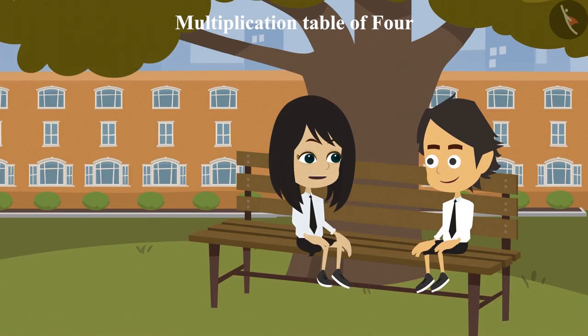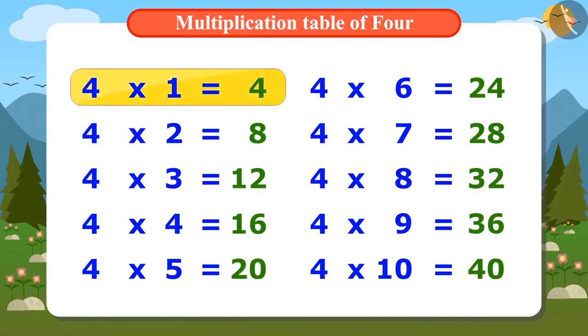Yes, now let's memorize this multiplication table of 4 in the sing-song manner. 4 ones are 4, 4 twos are 8, 4 threes are 12, 4 fours are 16, 4 fives are 20, 4 sixes are 24, 4 sevens are 28, 4 eights are 32, 4 nines are 36, 4 tens are 40.